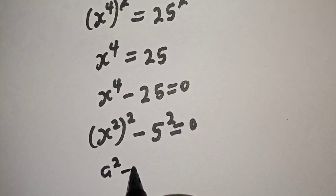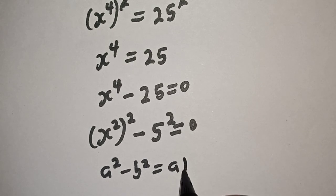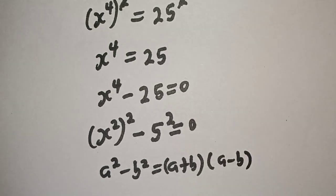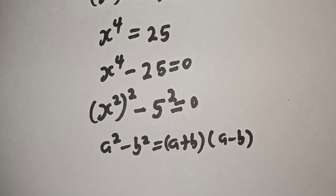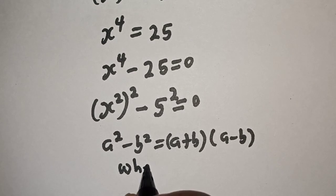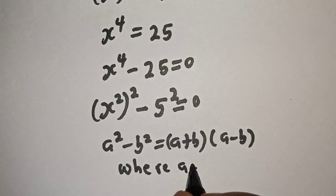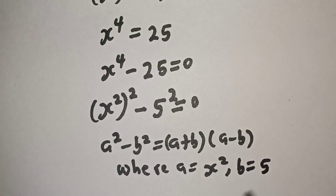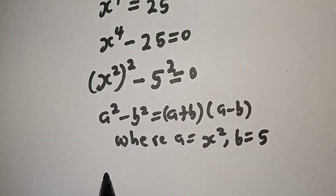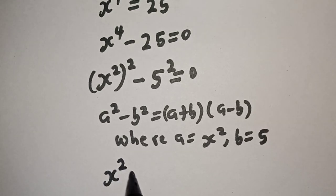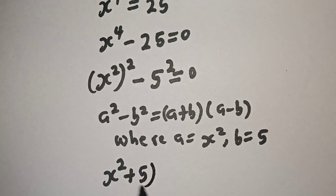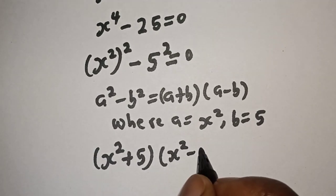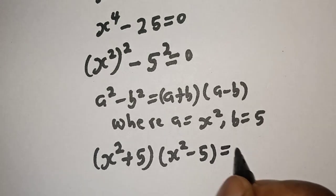Recall that a square minus b square is equal to a plus b multiplied by a minus b, where a is equal to s square and b is equal to 5. So we have s square plus 5, multiplied by s square minus 5, is equal to 0.